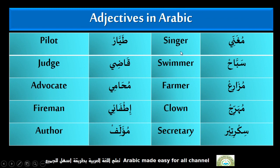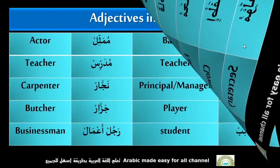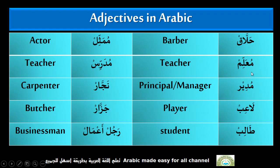Mughani — Singer. Subbaah — Swimmer. Muzariun — Farmer. Moharij — Clown. Secretair — Secretary. Jarn — Pilot. Qazi — Judge. Mohami — Advocate. Yatfai — Fireman. Mualif — Author. Halaq — Barber. Mualim — Teacher. Mudeer — Principal, Manager. Laibun — Player. Taalib — Student. Mumethil — Actor. Mudarris — Teacher. Mualim and Mudarris are both the same.